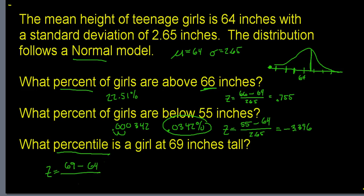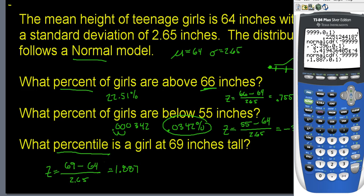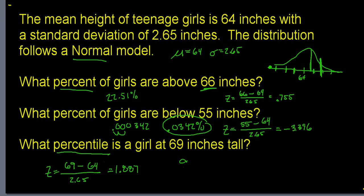Z-score: 69 minus 64 divided by 2.65 gives 1.887. That falls about one and a half standard deviations above the mean. Using normalCDF from negative infinity up to 1.887, the result is the 97th percentile. So if you're a girl who's 69 inches tall, 97% of girls are shorter than you and only 3% are taller — you're fairly tall.